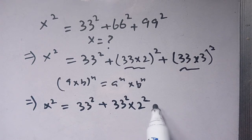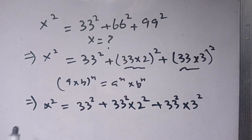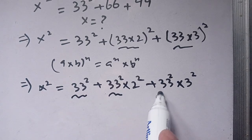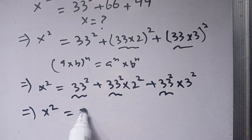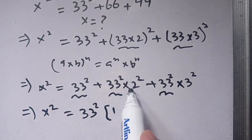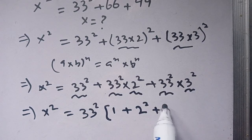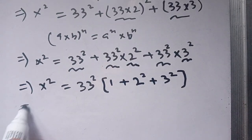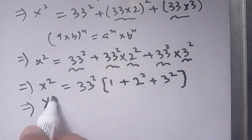Plus 33 squared times 3 squared. In the next step we can take out 33 squared as a common factor from each term, and we get x squared is equal to 33 squared times the quantity: 1 plus 2 squared plus 3 squared.